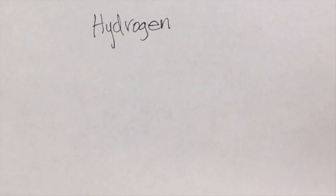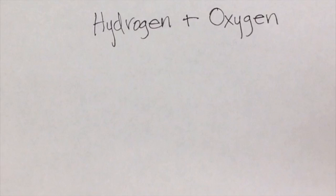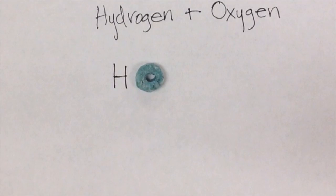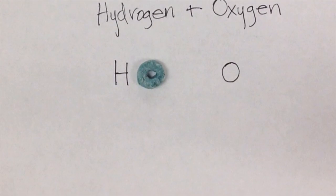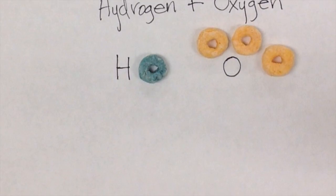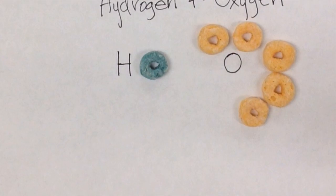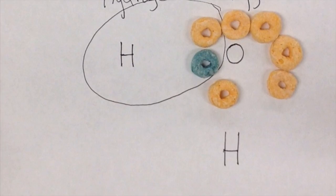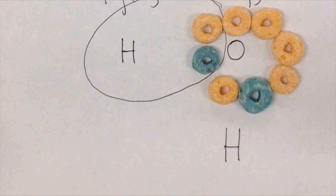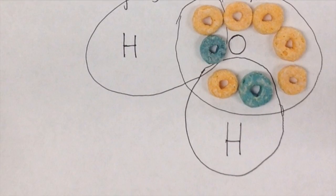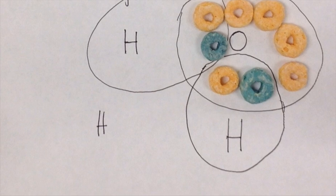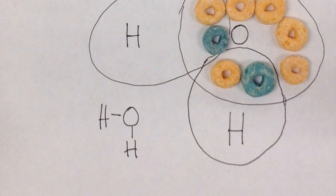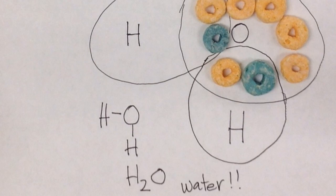Let's try another one. Hydrogen plus oxygen — hydrogen has one valence electron; these are two nonmetals, remember. Oxygen has six valence electrons. They decide to share. Hydrogen becomes a complete shell with two, but oxygen isn't complete, so it finds another hydrogen. Now the oxygen is complete with eight and the hydrogen is complete with two. We have two H's and one O — our favorite, H₂O.